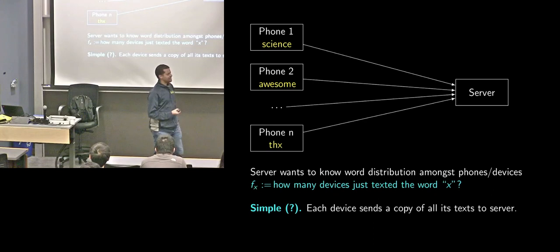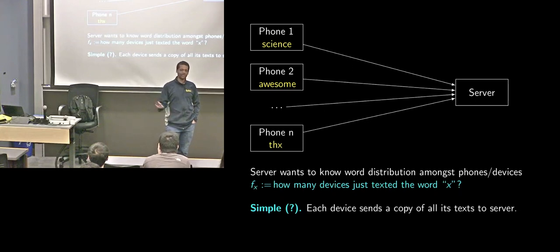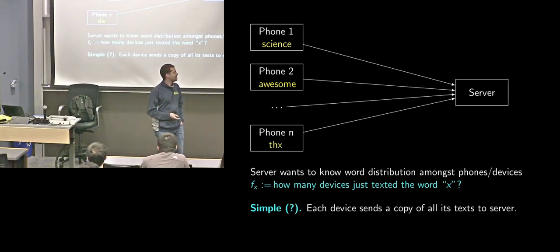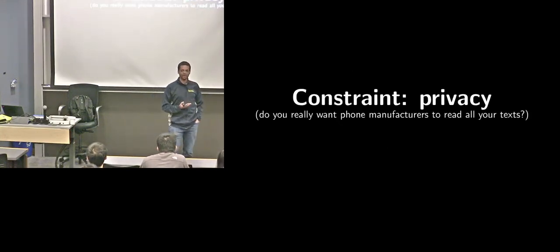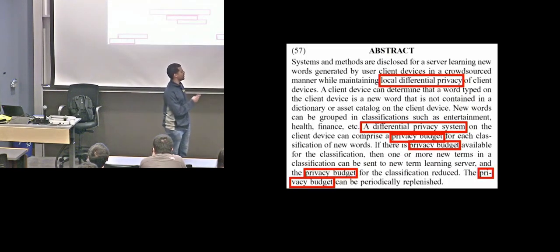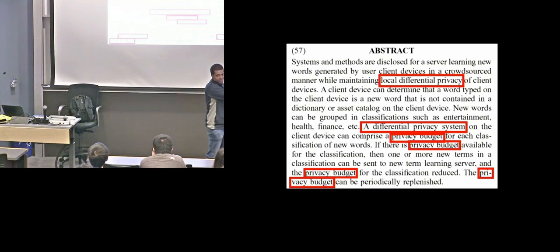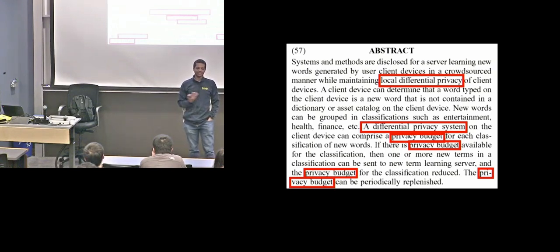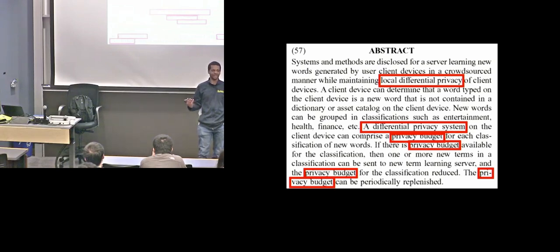Simple enough — every time you text your friend, you send a carbon copy to the device manufacturer. They learn texting patterns of everyone using their devices, and can learn how to do spell correction. But there's a constraint, which is privacy. Do you really want the phone manufacturer to read all your texts? Probably not. And if you go back to that patent filing, you'll notice all these things boxed in red: maintaining local differential privacy, a differential privacy system, privacy budget — privacy, privacy, privacy. They're aware their customers may not be happy with the company learning everything about them.